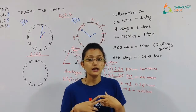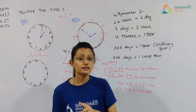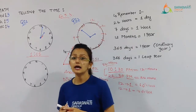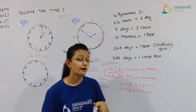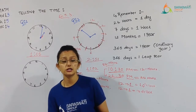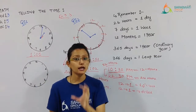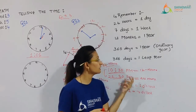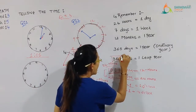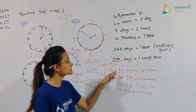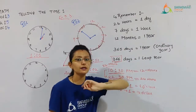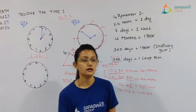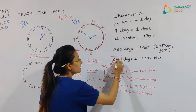But there is one exception: February. February has only twenty-eight days. But every four years, there is one additional day in February — so February gets twenty-nine days. And in that year with twenty-nine days in February, the total becomes three hundred and sixty-six days. That year is known as a leap year.